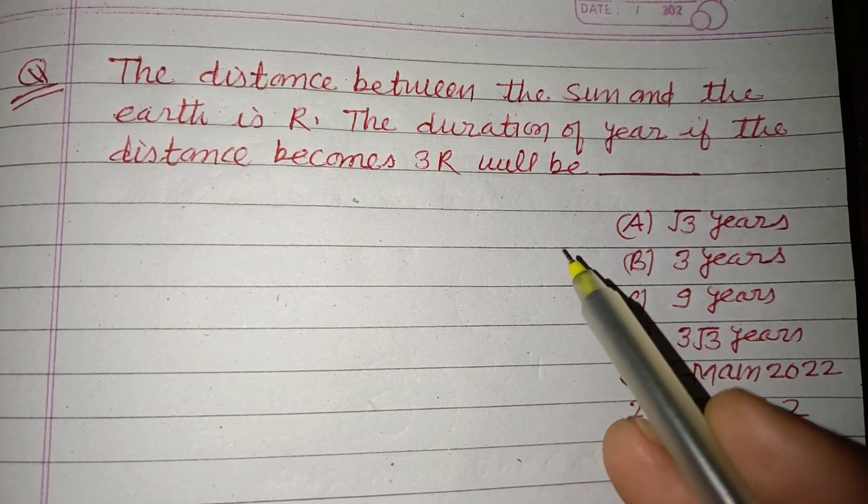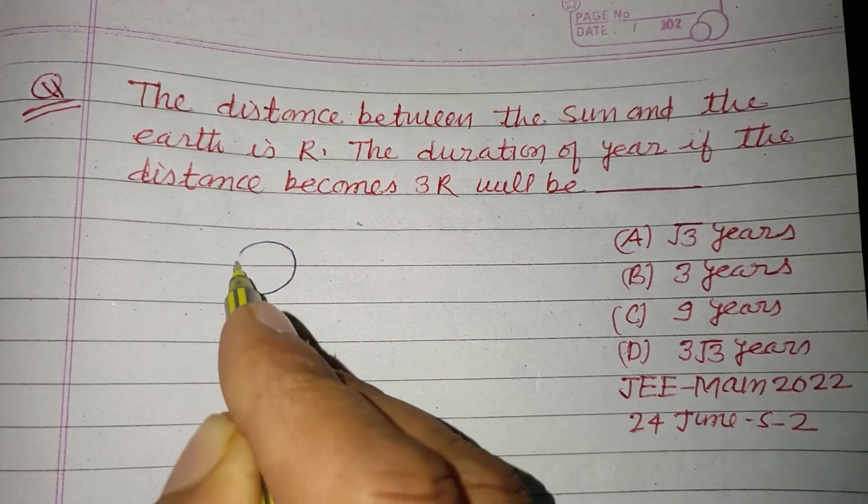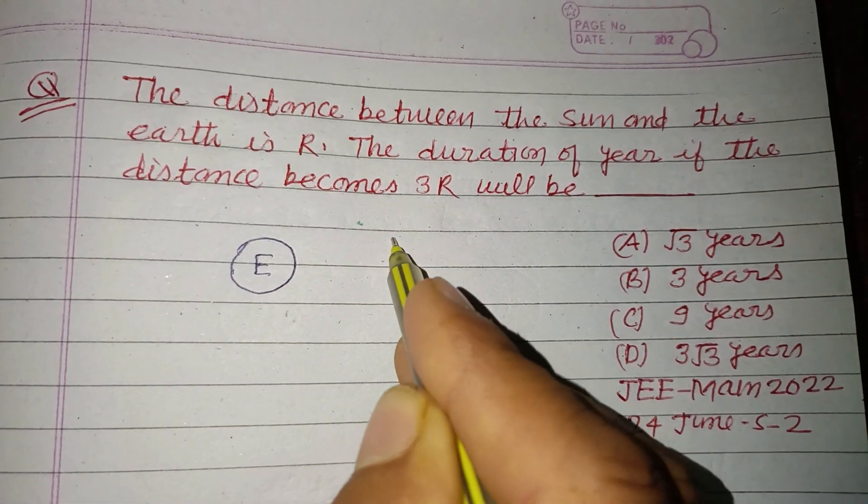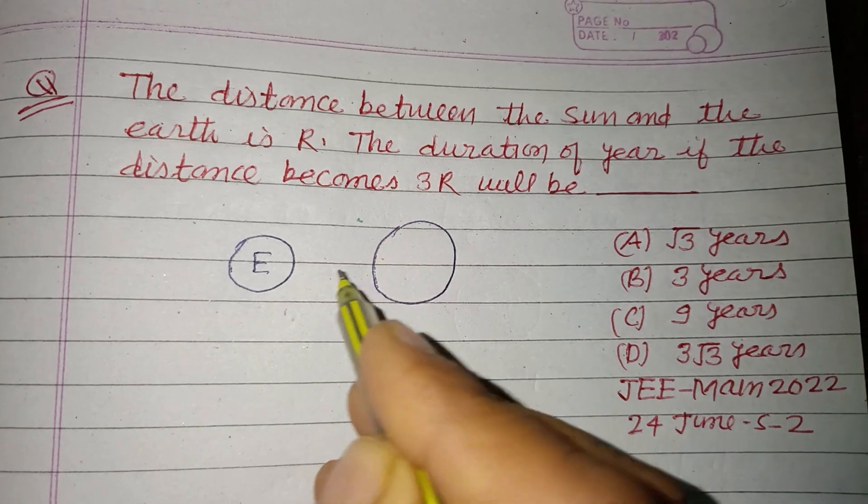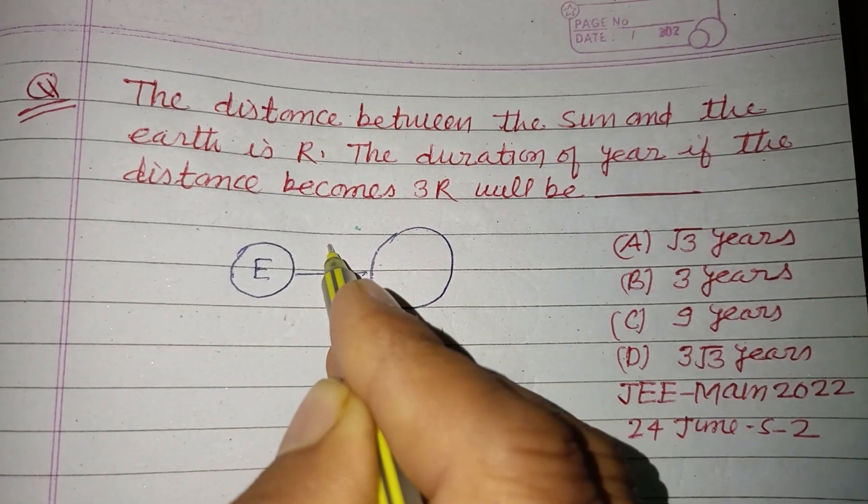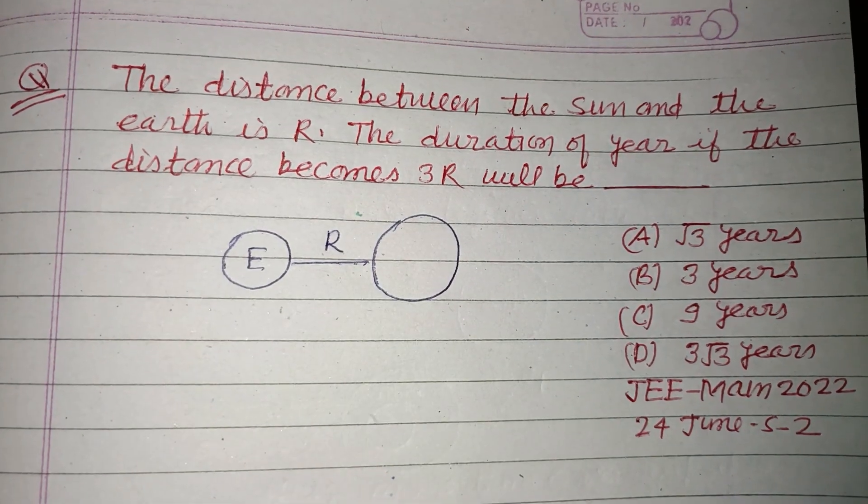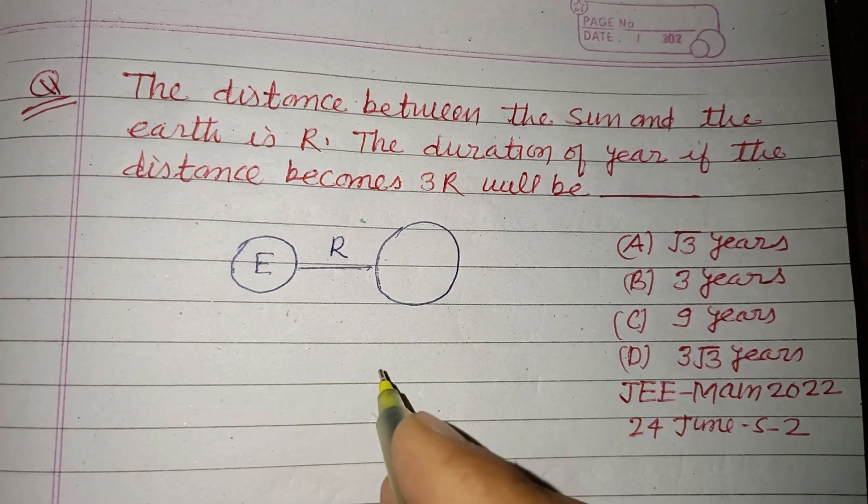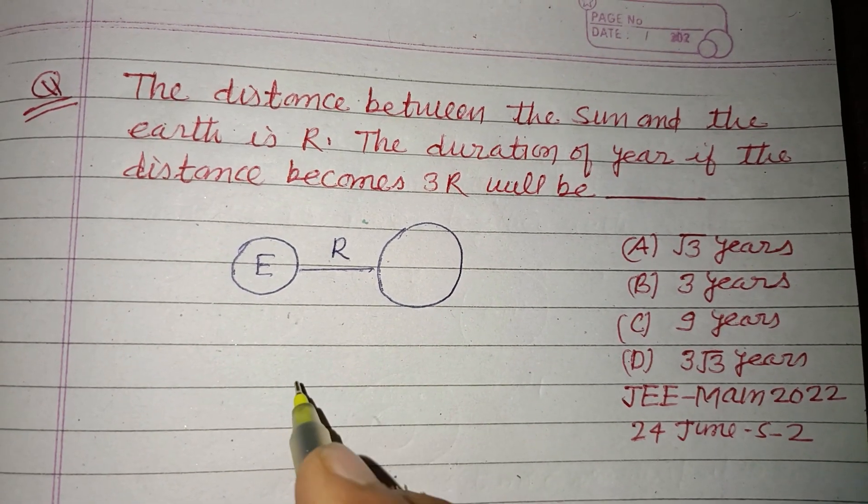So students, here it is Earth and it is Sun, and distance between them is R. Okay, so when this distance becomes 3R...